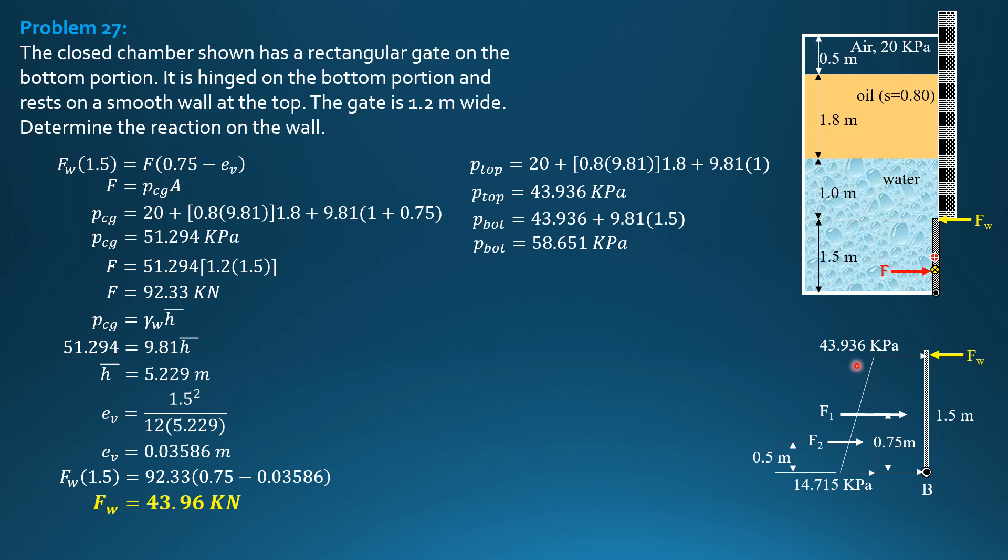F1 is volume of pressure diagram, area of rectangle times width perpendicular to the board 1.2. So FW, by the way, the equation, if we sum up moments about B, FW times 1.5 equals F1 times 0.75 plus F2 times 0.5. So that's our working equation for FW. So F1 is 43.936 times 1.5 times 1.2 perpendicular to the board. Volume of pressure diagram. So 79.085 kilonewtons.